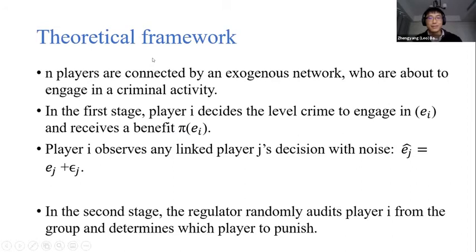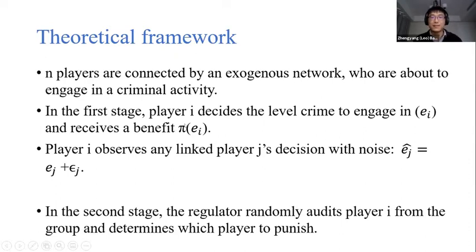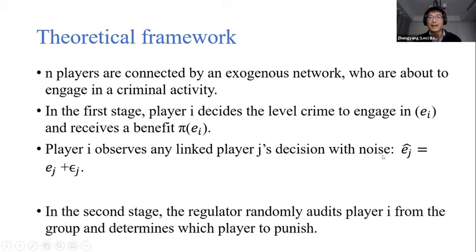Let me elaborate using a theoretical framework. We consider M players connected by an exogenous crime network who are about to engage in a criminal activity. In the first stage, each player i decides the level of crime to engage in and then receives a corresponding benefit, where the benefit function π(eᵢ) is increasing and concave. We also assume player i observes any linked player j's decision with some noise — player i observes ê_j, which is the true level committed by j plus some error. This error is crucial to have a well-behaved Nash equilibrium in our setup.